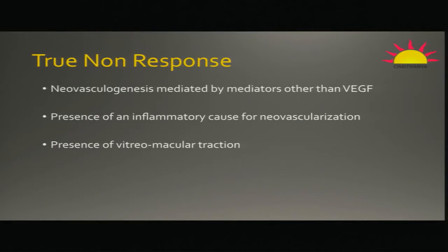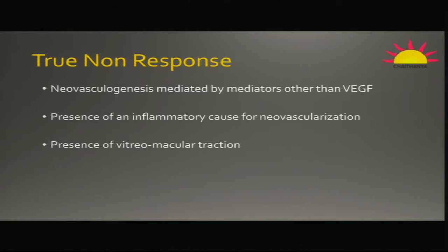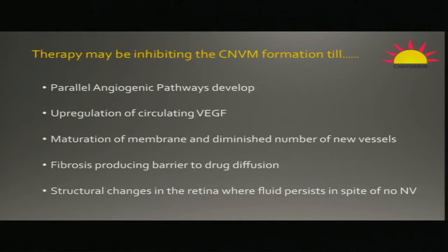True non-response has a couple of parts. There is something called VEGF polymorphism — everybody doesn't have the same receptors to VEGF, so person A may not respond like person B. You could also have an inflammatory cause of neovascularization that doesn't respond to anti-VEGF, or you could have vitreo-macular traction — three very important causes of non-response.